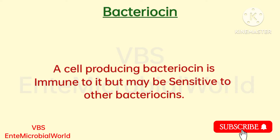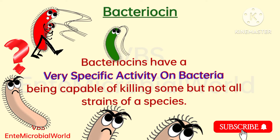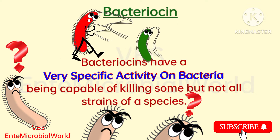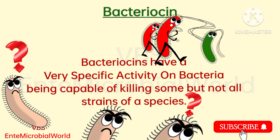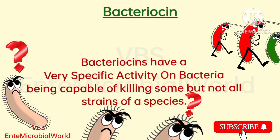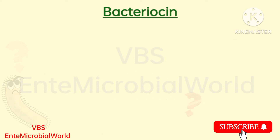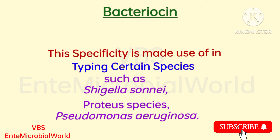A cell producing bacteriocin is immune to it but may be sensitive to other bacteriocins. Bacteriocins have a very specific activity on bacteria, being capable of killing some but not all strains of a species. This specificity is made use of in typing certain species.